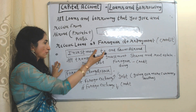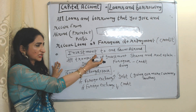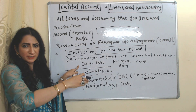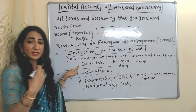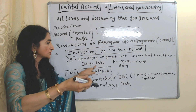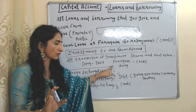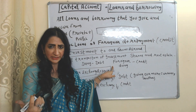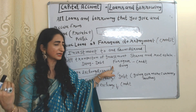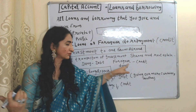Investment to and from abroad covers all transactions of investment like shares and real estate. If you do investment in a foreign country, our money is going out, so it will be debited in the Balance of Payment account. If foreigners do investment in our country, money from another country is coming in, so it will be credited.